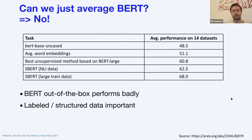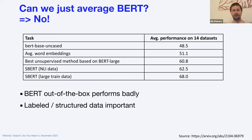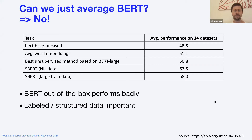So can we just take BERT? Sadly, no — it's not that simple. If you take BERT and just do the pooling, you actually get worse performance than average pooling of word embeddings like GloVe. So just taking a BERT model and doing pooling gives really, really poor performance. There are some unsupervised approaches, but the performance is still not great.